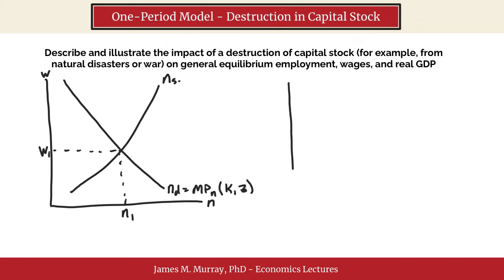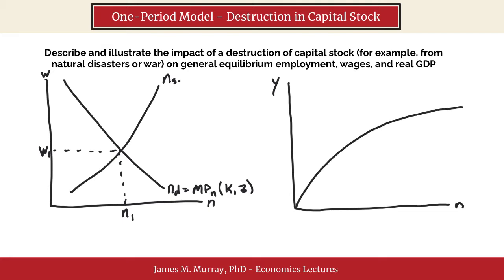Let's also draw the level of production of the economy, or real GDP. We're going to draw the production function. We're going to put employment, or labor, on the horizontal axis, and real GDP, or output, on the vertical axis. Our production function increases at a decreasing rate. The function looks something like: output depends positively on the state of technology, and a function of capital stock and labor. Let's take this exact same N1, put it right here, and if we go up to the production function, we can see what level of production we will have in the economy.